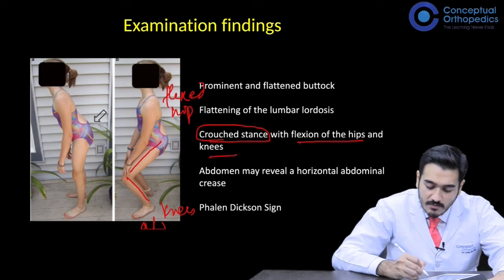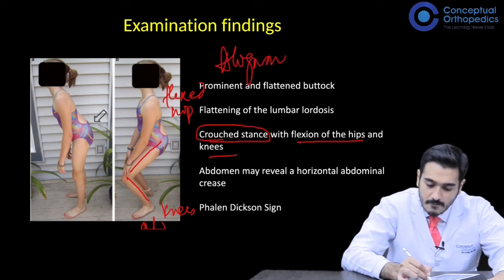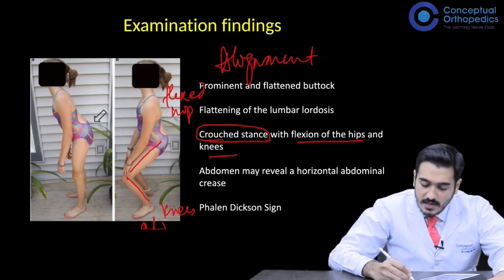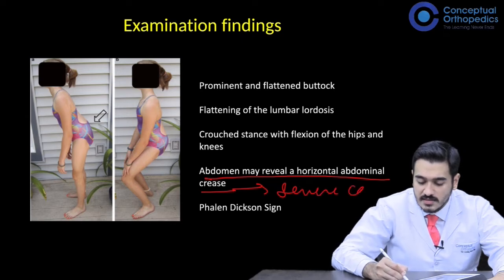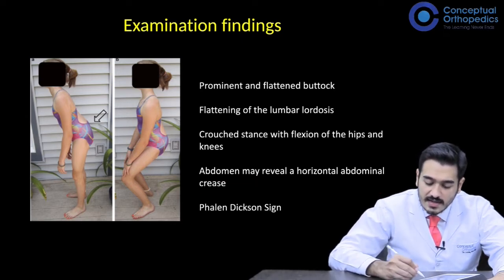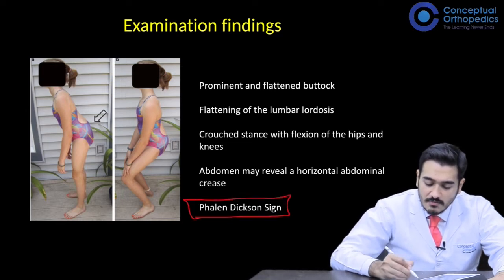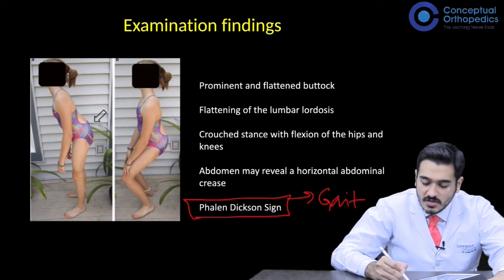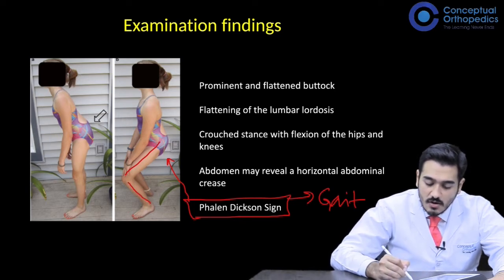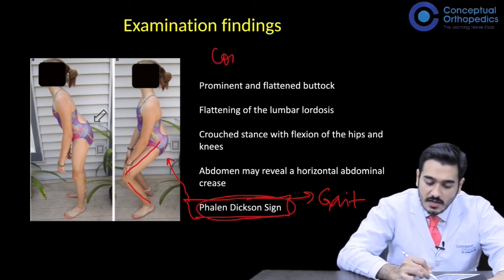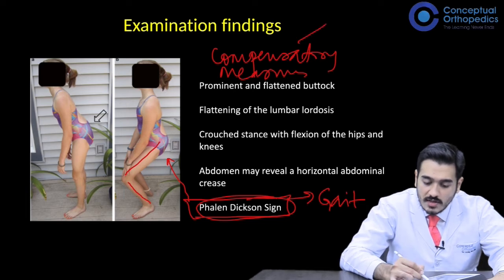This compensation is in order to try and maintain the alignment. Clinically we may even see an abdominal crease which is horizontal, seen in severe cases. Apart from this we may see a classic Fallen Dixon sign. This is a sign related to the gait of the patient — a child who walks with this compensation of flexed hips and flexed knees will present with this kind of altered gait.